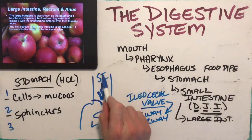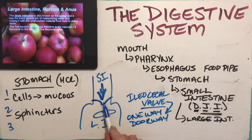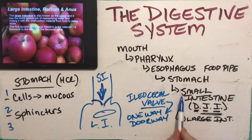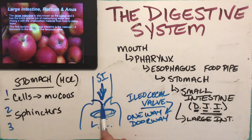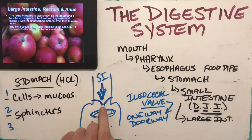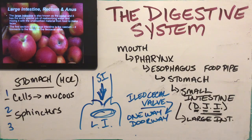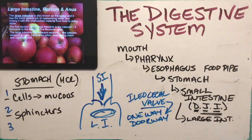Food travels down through the valve from small to large intestine — that's the intended direction — and once in the large intestine it can't go back up. Our heart also has valves that control blood flow in one direction. The large intestine has different sections, which we can see on the diagram.